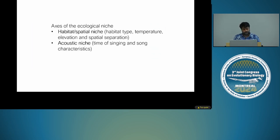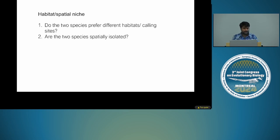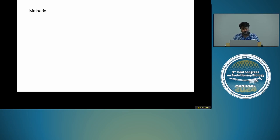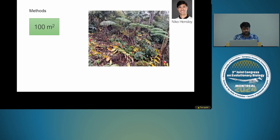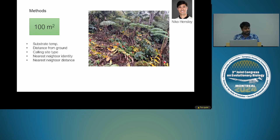Then I looked at two important axes: the habitat and spatial niche, and the acoustic niche. For habitat, I looked at calling sites, temperature, elevation, and spatial separation. Working with postdoc Nico Hensley, we scouted places where we could hear singing males of both species, approached as close as possible, placed colored flags — different for each species — and recorded substrate temperature, distance from ground, calling site type, and nearest neighbor identity and distance. We did this across two plots. One challenge is that these crickets are morphologically cryptic, so we could only distinguish calling males in the field.